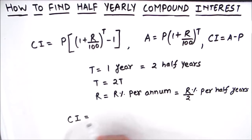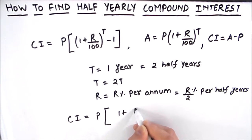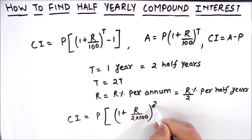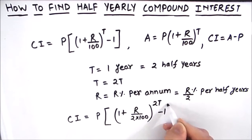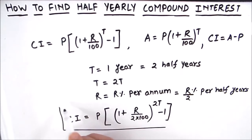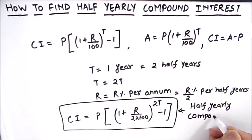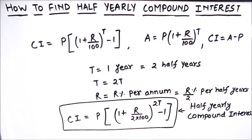So our final formula for finding the half-yearly compound interest is: CI = P × [(1 + r/(2×100))^(2t) − 1]. Half-yearly compound interest is also called semi-annual compound interest. So if it is given to find compound interest half yearly or semi-annually, it means the same thing.